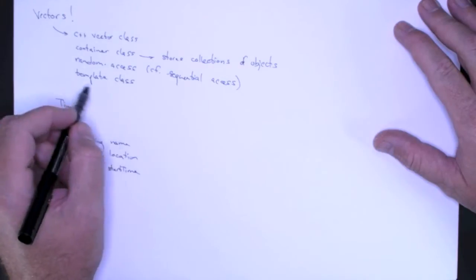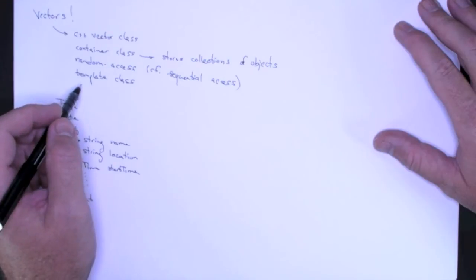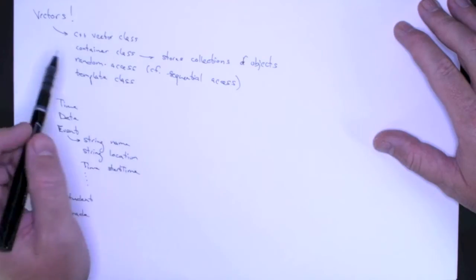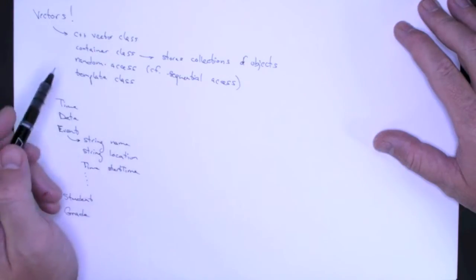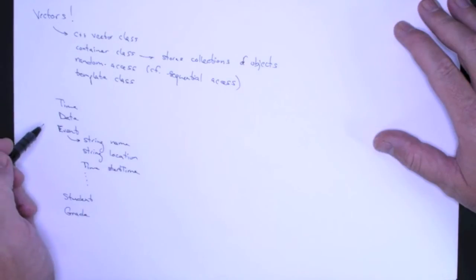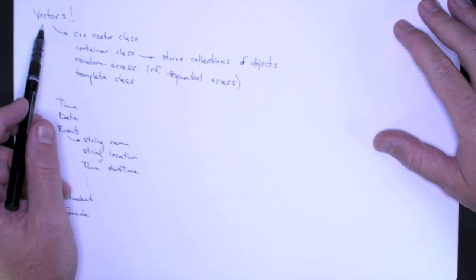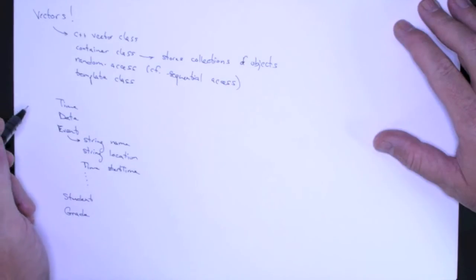And finally, this is a template class. And in C++, a template class is a way to make containers store any object. So with a vector, we could store a collection of times, a collection of dates, a collection of events. And the nice thing about template classes is we only have to implement one vector, and we can store any object in it.